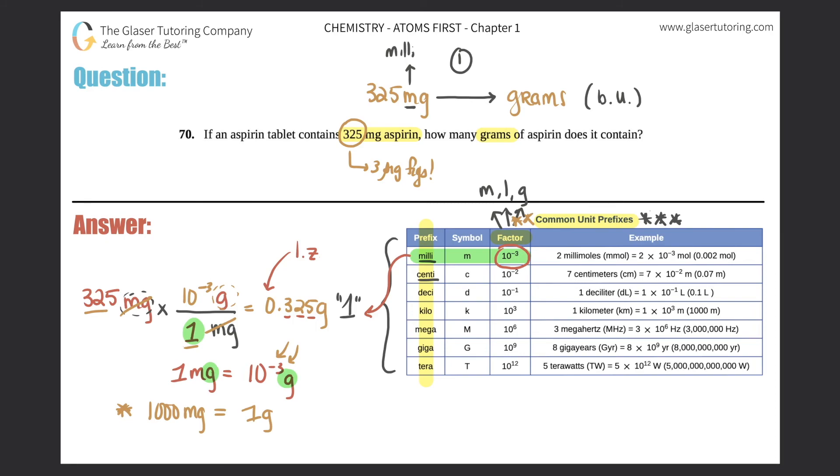So box that answer off, highlight it, do whatever you got to do. That is the answer for this problem. And that's it. It was just a simple one-step conversion.